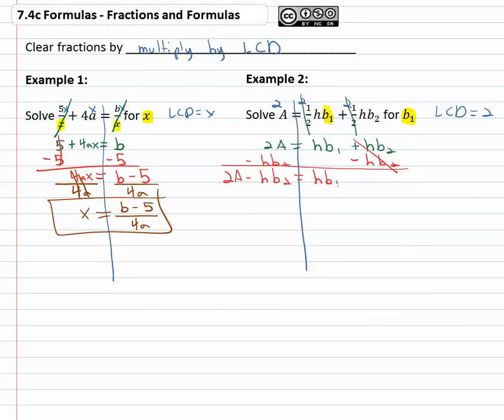Finally, to get b1 alone, we divide by what it's multiplied by, the h on both sides. The b1 is now alone, and it's equal to 2A minus hb2 all over h.